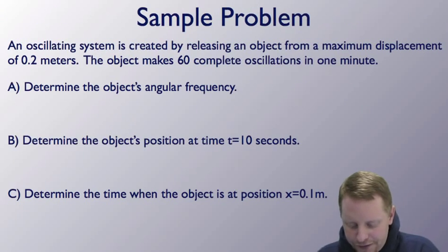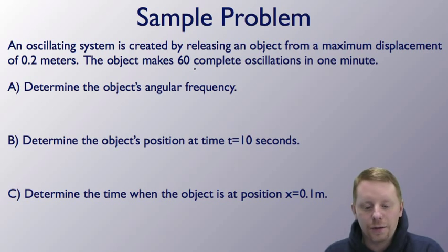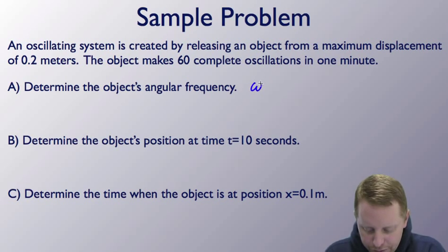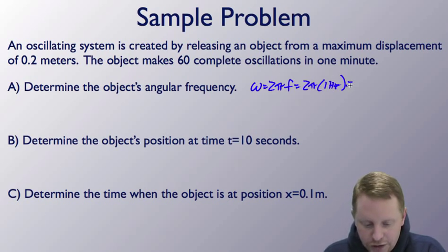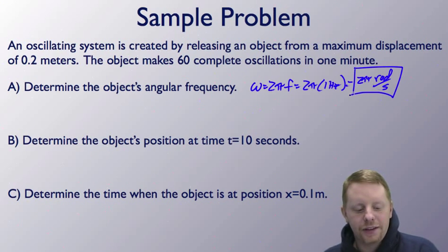Let's take a look at a sample problem, seeing if we can't put all of this together. An oscillating system is created by releasing an object from a maximum displacement of 0.2 meters. The object makes 60 complete oscillations in 1 minute, so 60 oscillations in 60 seconds, that's going to be a frequency of 1 hertz. Determine the object's angular frequency. Angular frequency omega is 2π times the frequency, or 2π times 1 hertz, which is just going to be 2π radians per second.